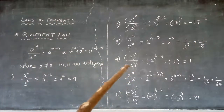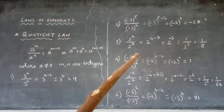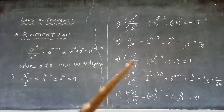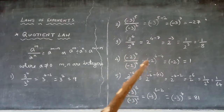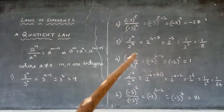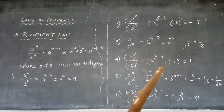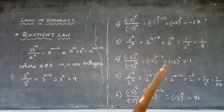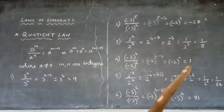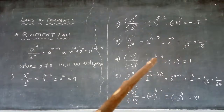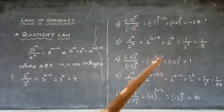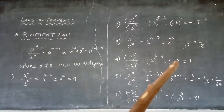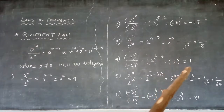Example 4: (-2)⁴ divided by (-2)⁴. Bases are the same, so write the base and subtract the exponents: 4 minus 4 = 0. Same number with opposite sign gives 0. So the result is (-2)⁰ = 1, because anything to the power of 0 is 1.